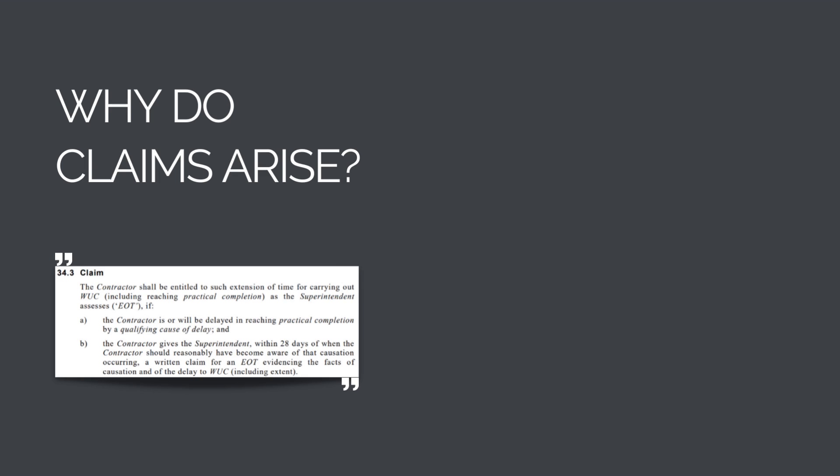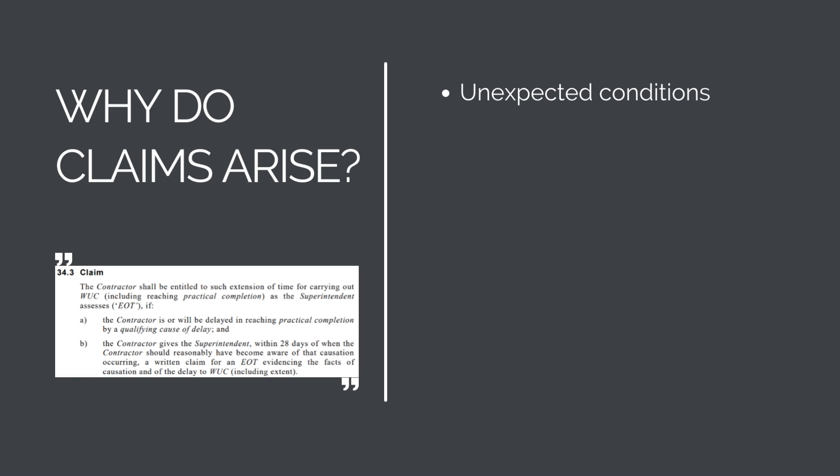A claim can arise whenever circumstances change from tender. Basically, if what the contractor quoted and agreed to has materially changed, there is the potential for a claim. Example sources include unexpected conditions, poorly defined and understood scope, defective design, and access issues.